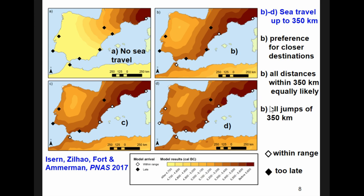And here we have three models with sea travel. In all of them, the sea travel can take place up to 350 kilometers, because lower distances are not enough to explain the observed pattern. In this case, there is a preference for closer destinations, which means that it is more likely for humans to jump short distances. But still, it arrives late almost everywhere. Here, all distances are equally likely, so it is a little bit faster, and here all jumps are of 350 kilometers. And only in this case, the front arrives in time everywhere.